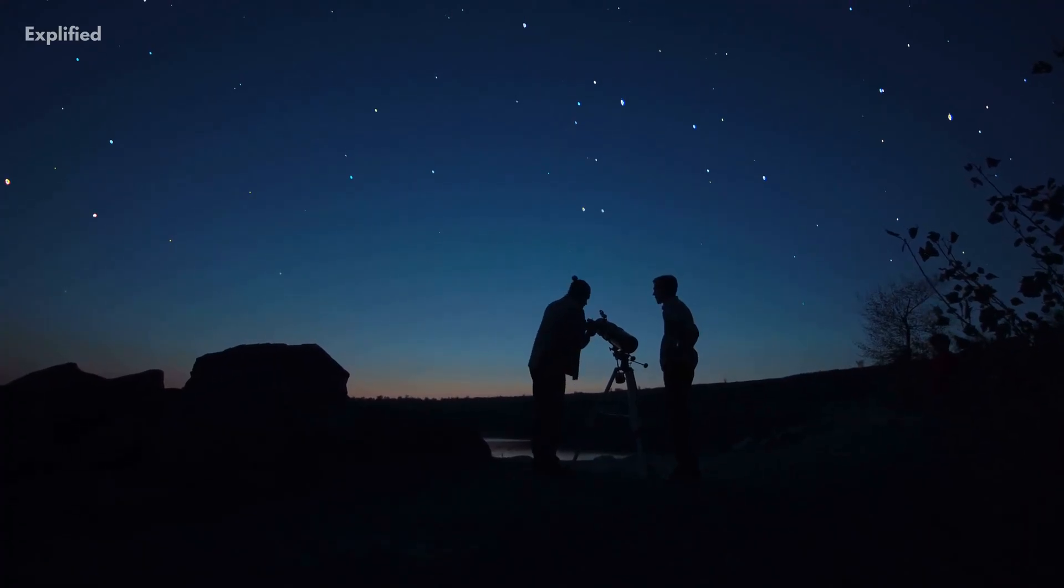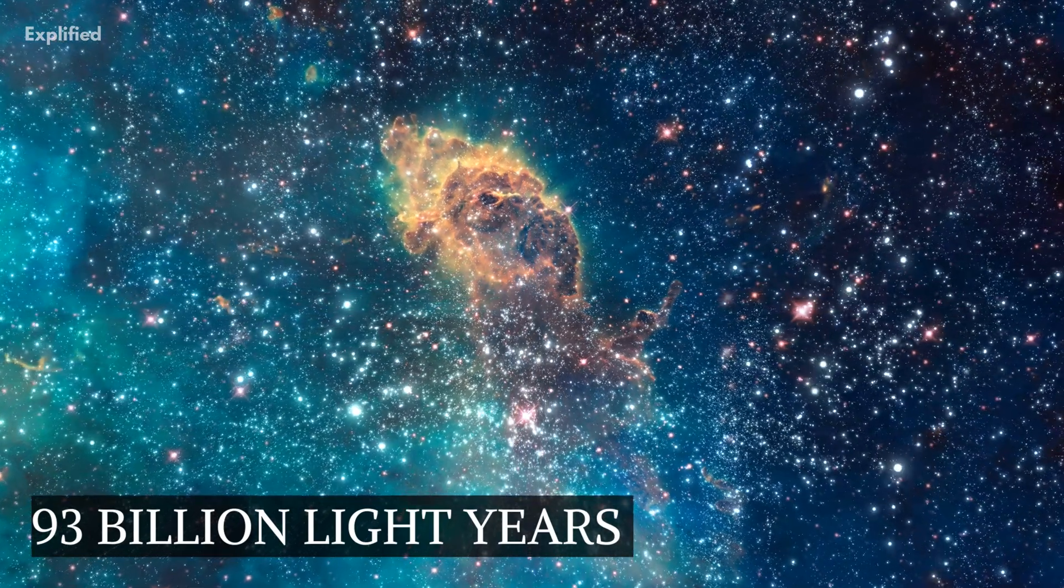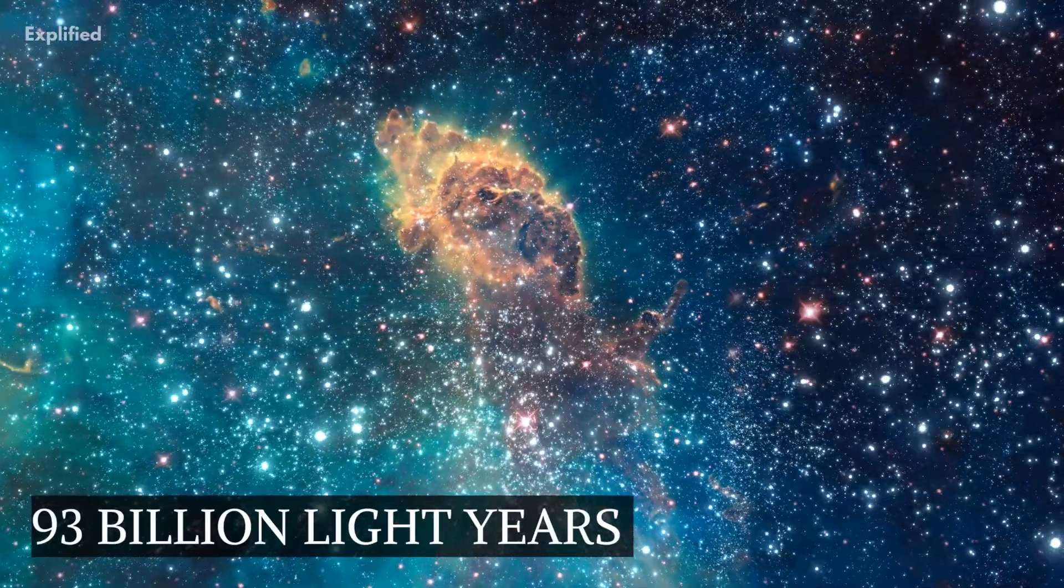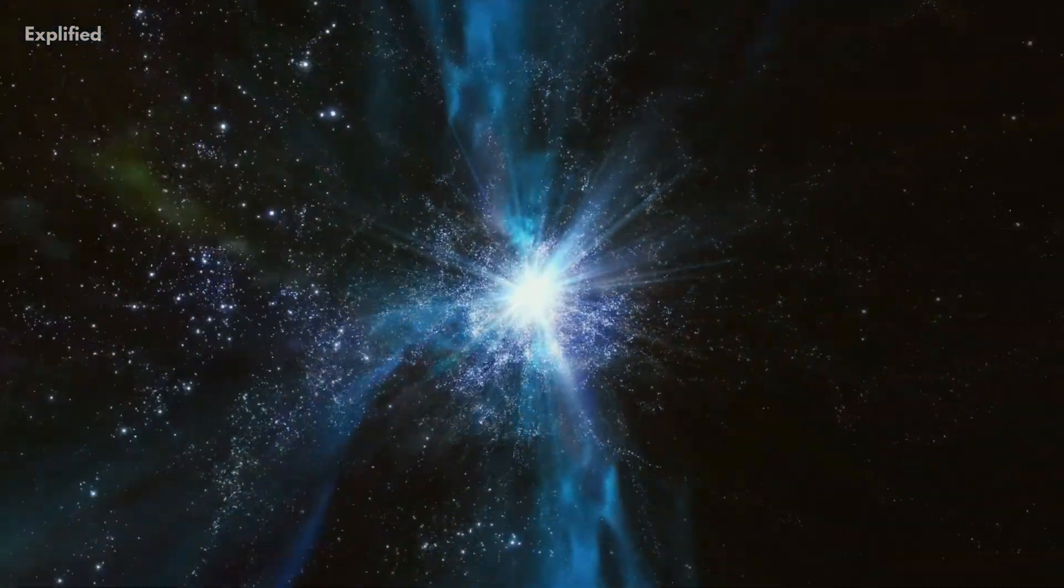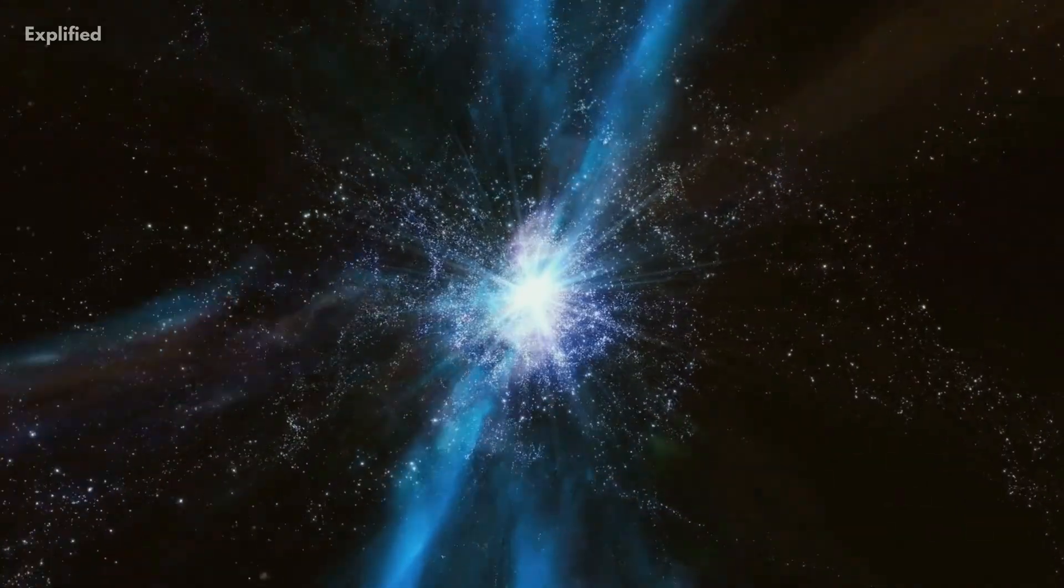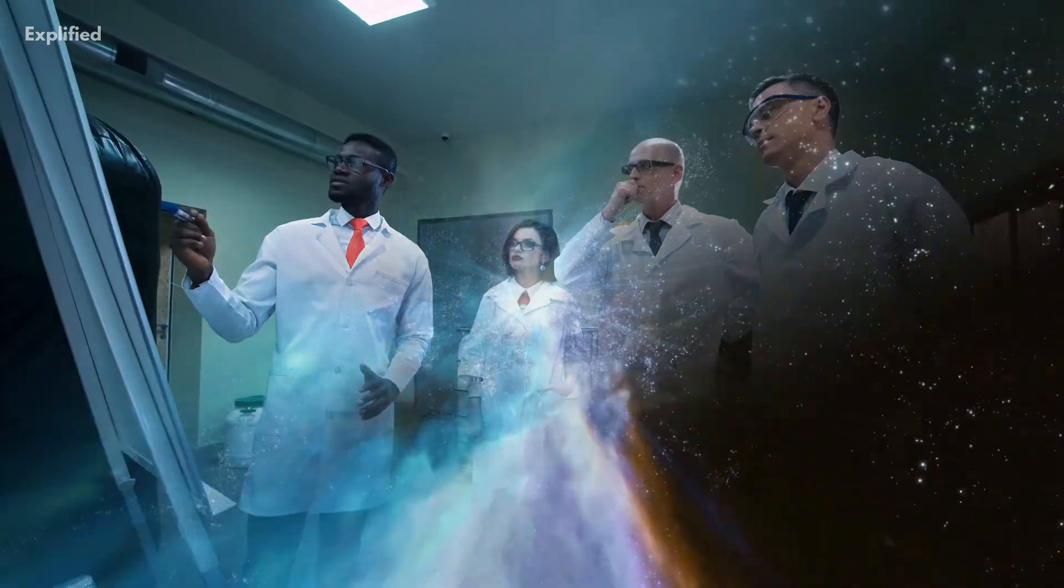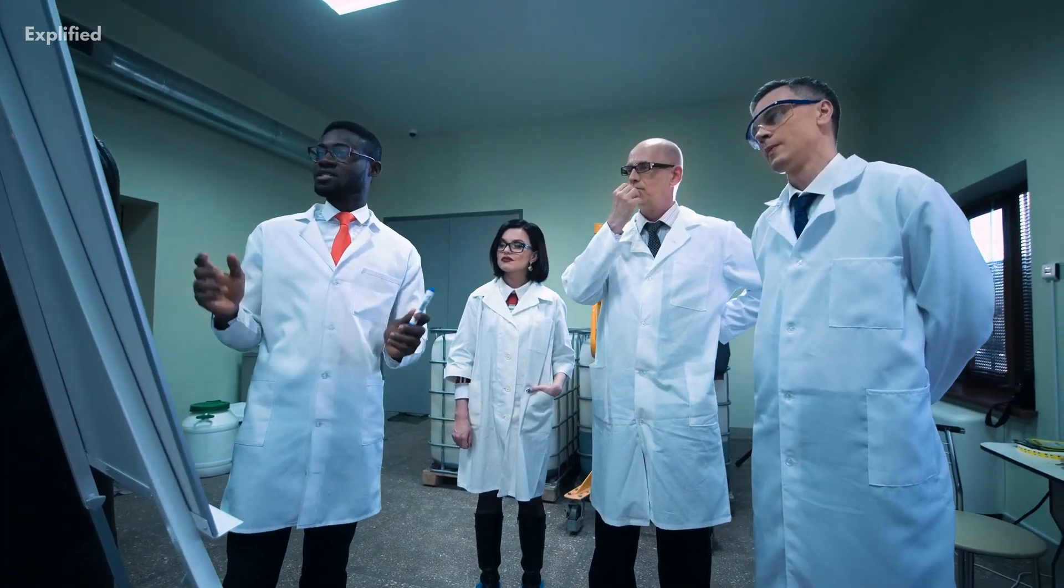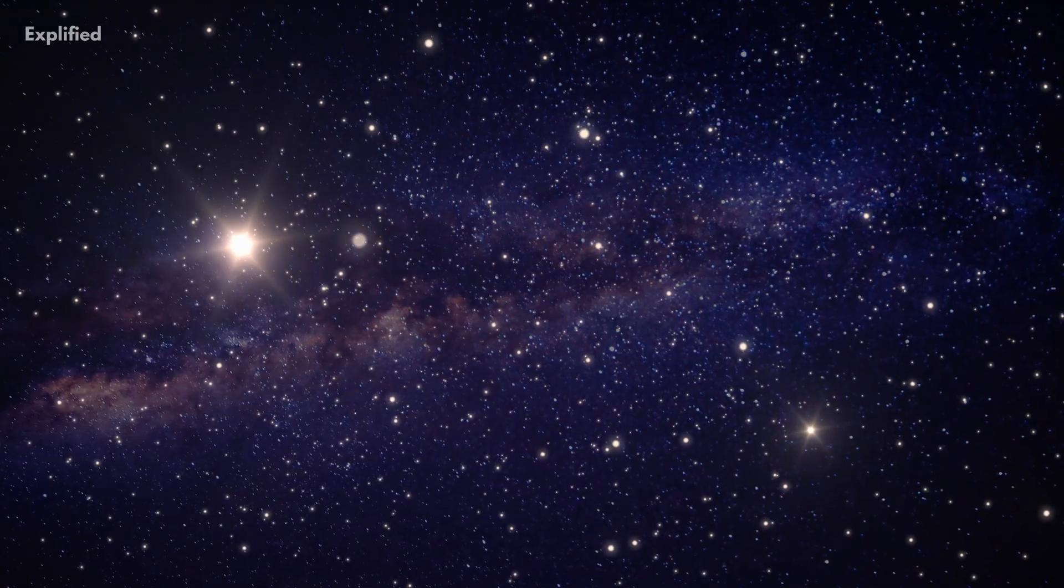The observable universe is said to be around 93 billion light years in diameter. Imagine how big our entire observable universe might be - pretty huge, right? Well, scientists have found a structure in our universe that is so large it's actually quite incomprehensible.